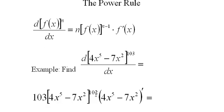You simply bring the 103 out front, subtract 1 from the 103 in the power and get 102 times the derivative of what was inside here, the 4x to the fifth minus 7x squared.